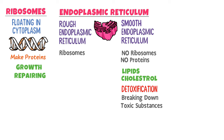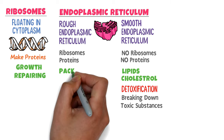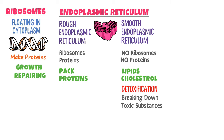Now coming to the rough endoplasmic reticulum. We know that it contains ribosomes, and ribosomes form protein. The function of rough endoplasmic reticulum is that it helps the ribosomes to produce proteins. Secondly, rough endoplasmic reticulum picks up and encloses the proteins into vesicles.